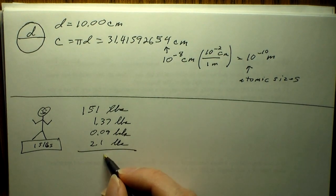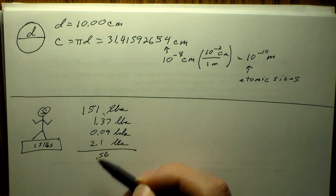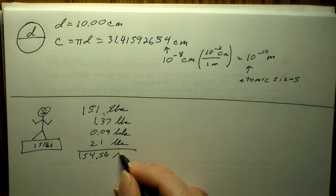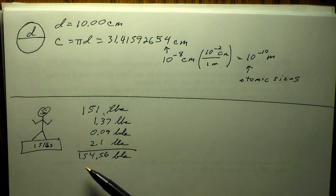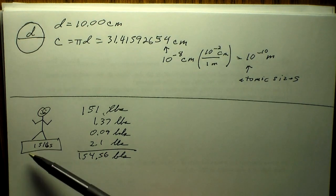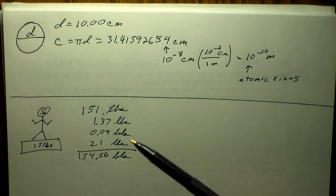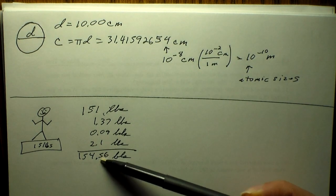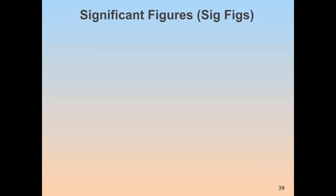Adding all those up gives 154.56 pounds. But does that mean your actual weight is 154.56 pounds? No — because what's the accuracy of the scale? For all you know, you might be 151.3 pounds, but the scale just reads 151. To answer questions like these, we look at the rules for significant figures.